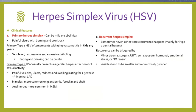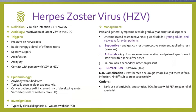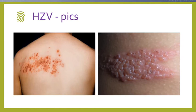Herpes simplex, chickenpox (varicella zoster), and herpes zoster (shingles) — have a read over these. The characteristic features of herpes zoster are that it presents along a dermatomal distribution with severe pain typically prior to the eruption of lesions, presenting as a blistering rash 1–3 days after onset of pain. Vesicles transition into pustules, then slough and erode into crusted lesions.